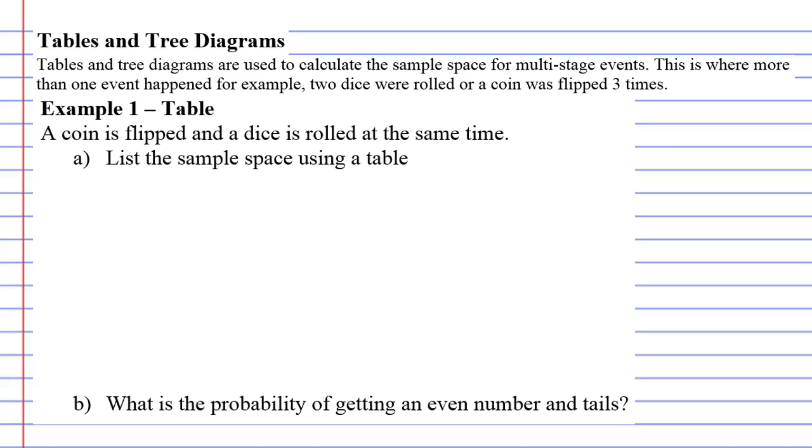In example one, it says a coin is flipped and a dice is rolled at the same time. So we've got two events, a coin being flipped and a dice rolled. Then we're asked to list the sample space using a table.